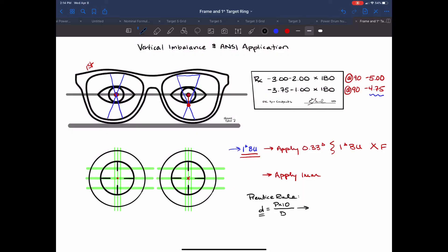We had one diopter base of prism and multiply prism times 10 divided by the power of the lens which was 4.75. So now we have 2.1 millimeters of distance. And remember that we're solving for the distance. So this isn't 2.1 prism. We know how much prism we have in here.